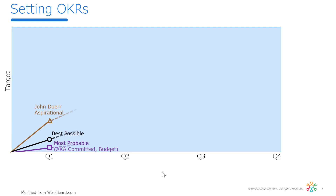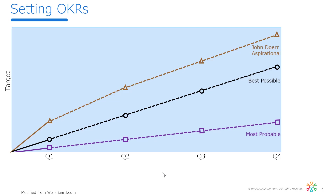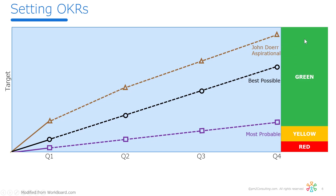As I extend those out across time, best possible is still significantly better than what's in your budget. If I'm doing red, yellow, green — it's red at some level below most probable, amber as I approach most probable, and then green above that or different shades of green. Our experience is when you use best possible, you end up somewhere between most probable and best possible, and that is what we're trying to do with OKRs in terms of inspiring better performance.